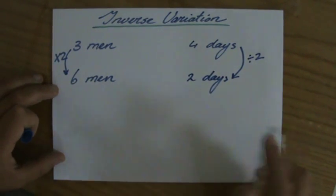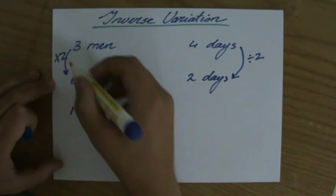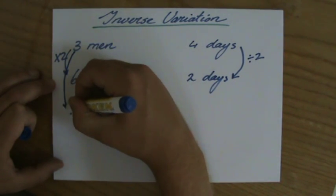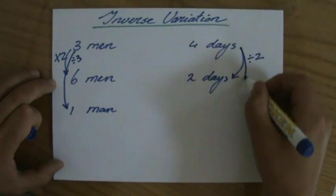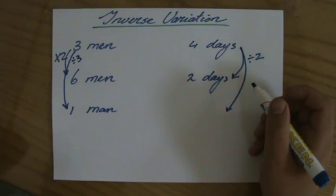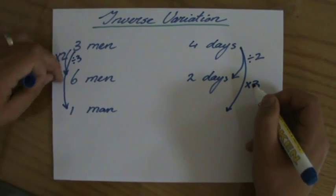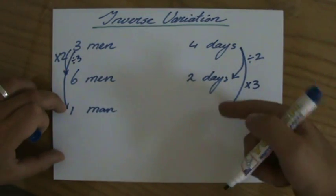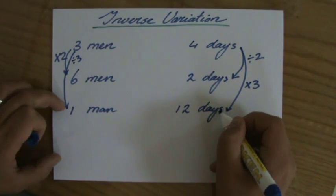But let's say I have an argument with all of them, and I have to do it all by myself. So from three to one, that is dividing by three. If I have to do it all by myself, is that going to take me less or more than four days? Well, of course it's going to take more than four days. That is dividing by three. I multiply it by three, it's going to take me twelve days to do everything by myself.